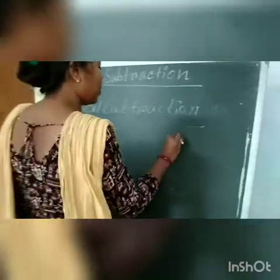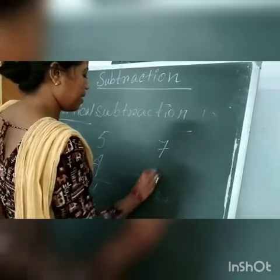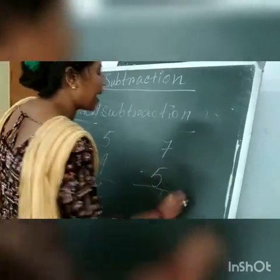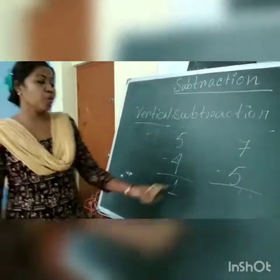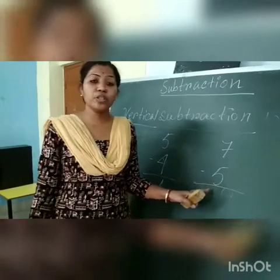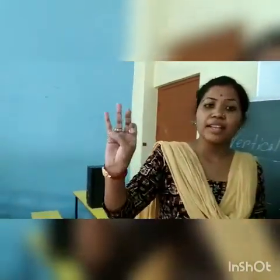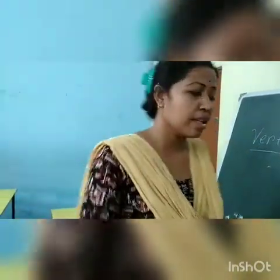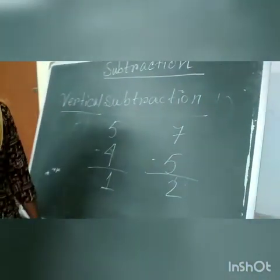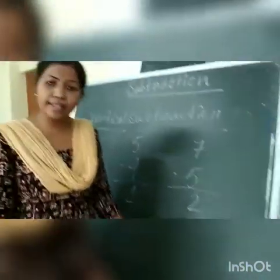For example, 7 minus 5. We will start counting after 5: 5, 6, 7 — how many houses? 2. So the answer will be 2. Very easy.